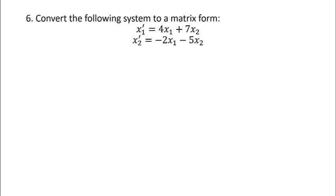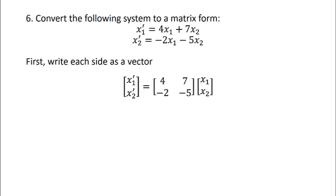Okay, so suppose we want to convert the following system into a matrix form. Again, we're just thinking about rewriting things using a different notation. So we would first write each side as a vector. So on the left we have the vector x1 prime, x2 prime. And on the right we want to think of this as a product of the matrix 4, 7, negative 2, negative 5 with the vector x1, x2.